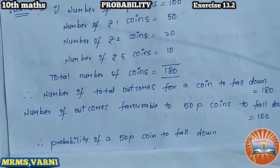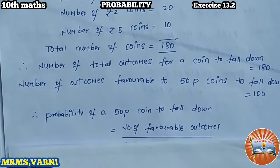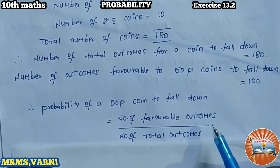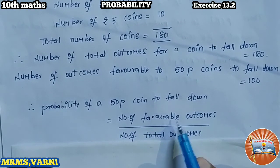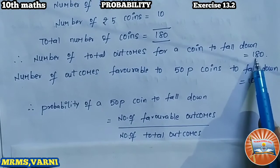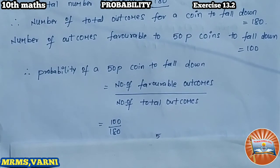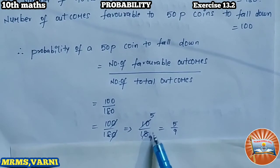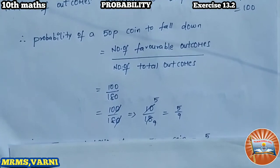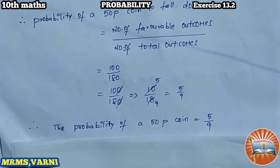The probability of a 50 paisa coin falling down: the formula is number of favorable outcomes divided by number of total outcomes. Favorable outcomes = 100, total outcomes = 180. So that is 100 by 180. Cancelling the zeros, we get 10 by 18, which simplifies to 5 by 9. So the probability of a 50 paisa coin is 5 by 9. I hope you understand.